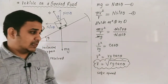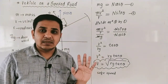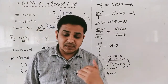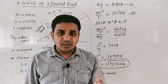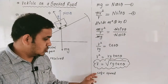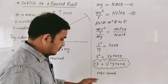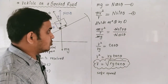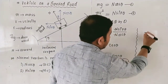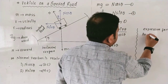This is the expression for safe speed of the vehicle along the banked curved road. If the question asks to derive the expression for safe speed, you derive V equals root of rg·tan theta. If the question asks for the expression for angle of banking, then from v² = rg·tan theta, we get tan theta = v²/rg, and therefore theta equals tan inverse of v² divided by rg. This is the expression for angle of banking.